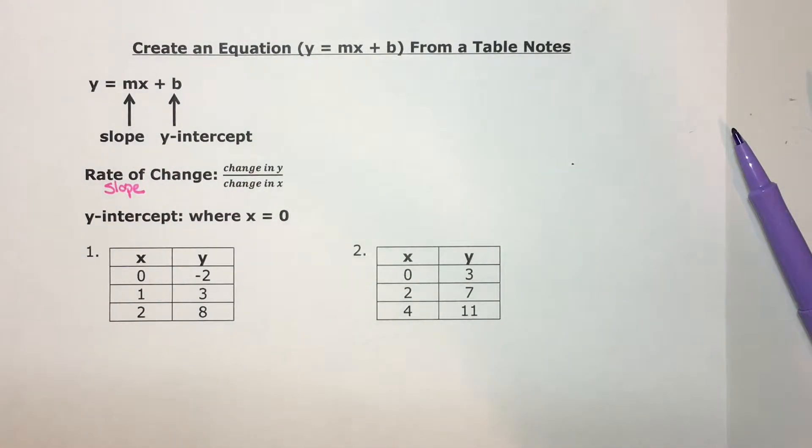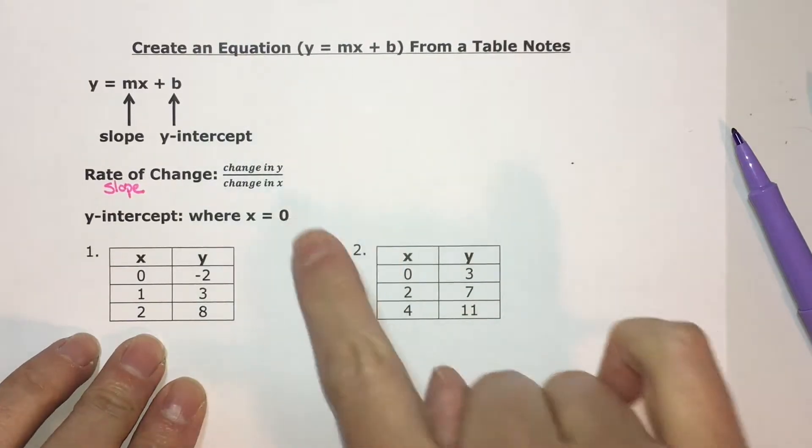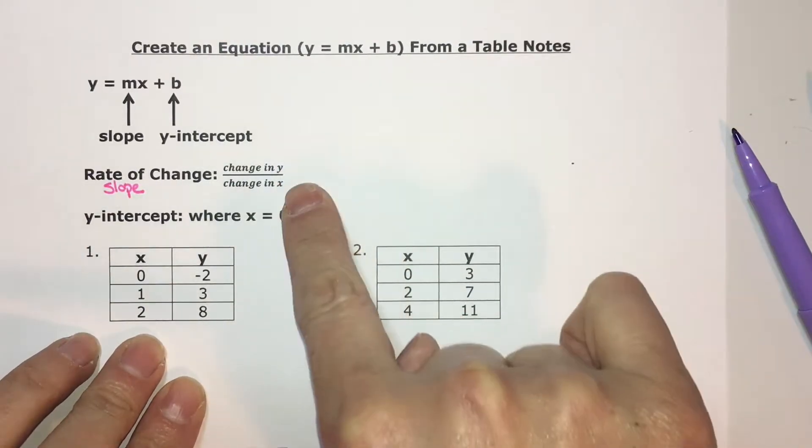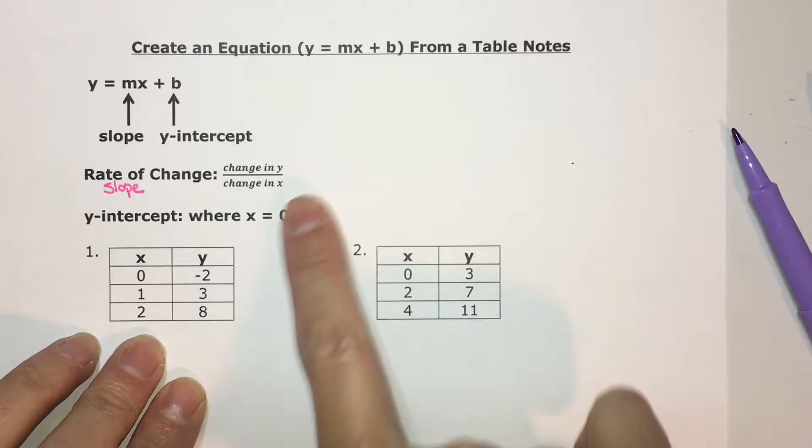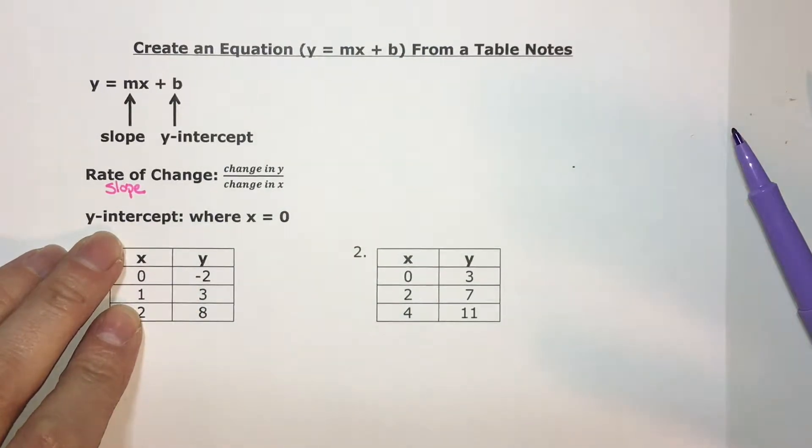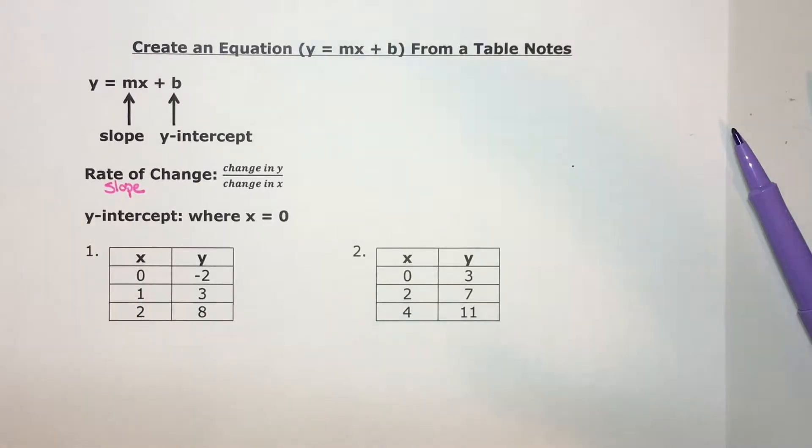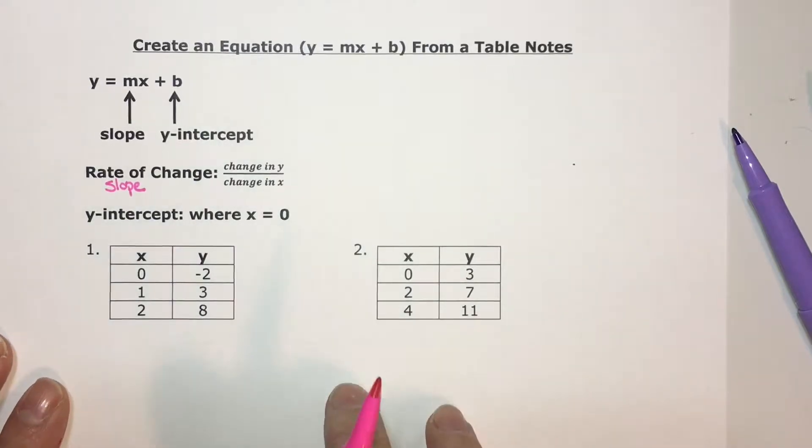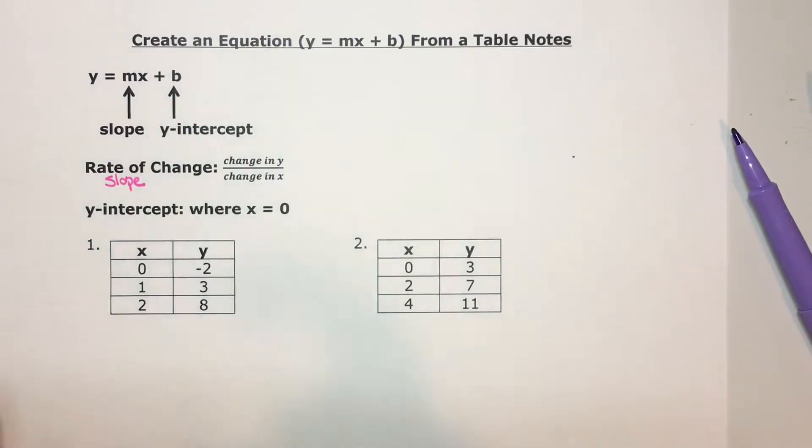To find the rate of change of a table, you do the change in the y-values over the change in the x-values. The y-intercept is where x equals 0. You find the y-value where x is 0. Some of these are easy, and I'll show you how to do those, and others are a little more complicated.